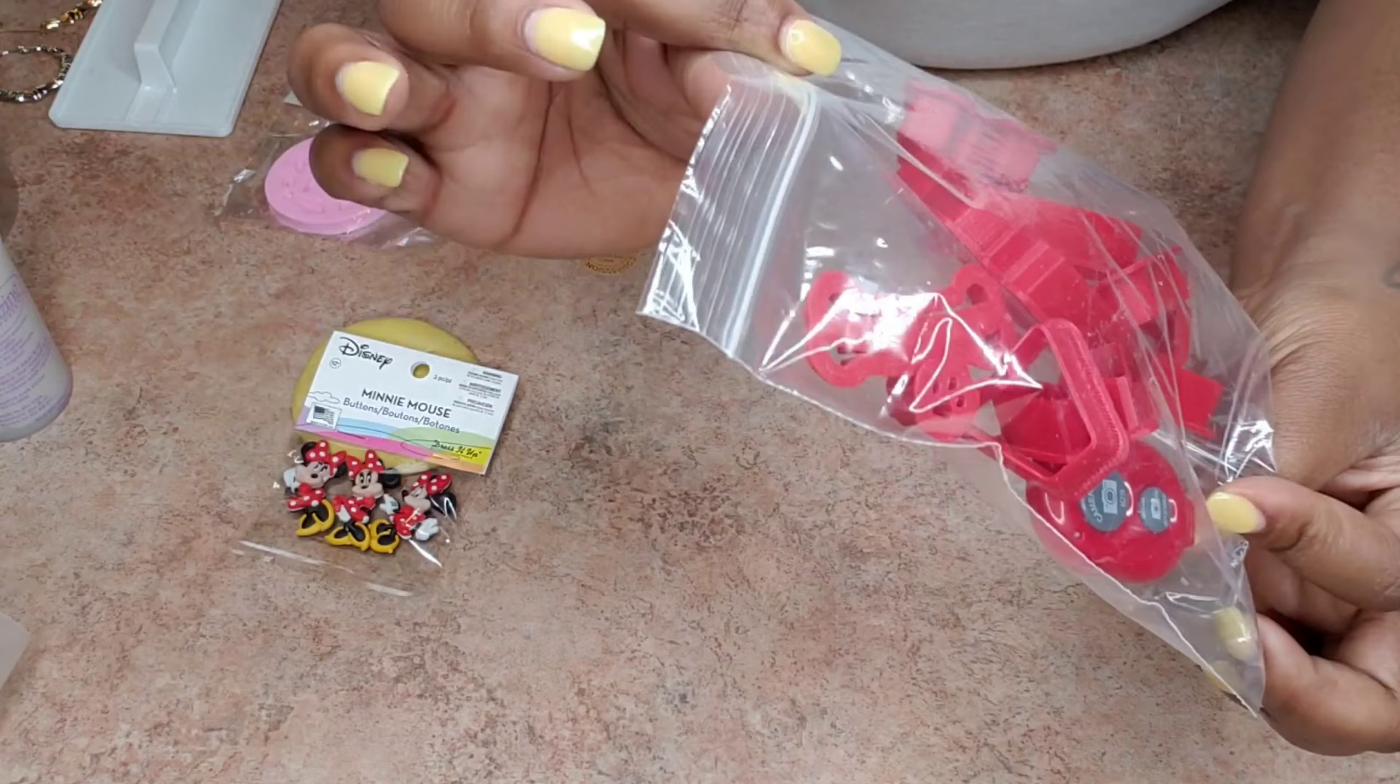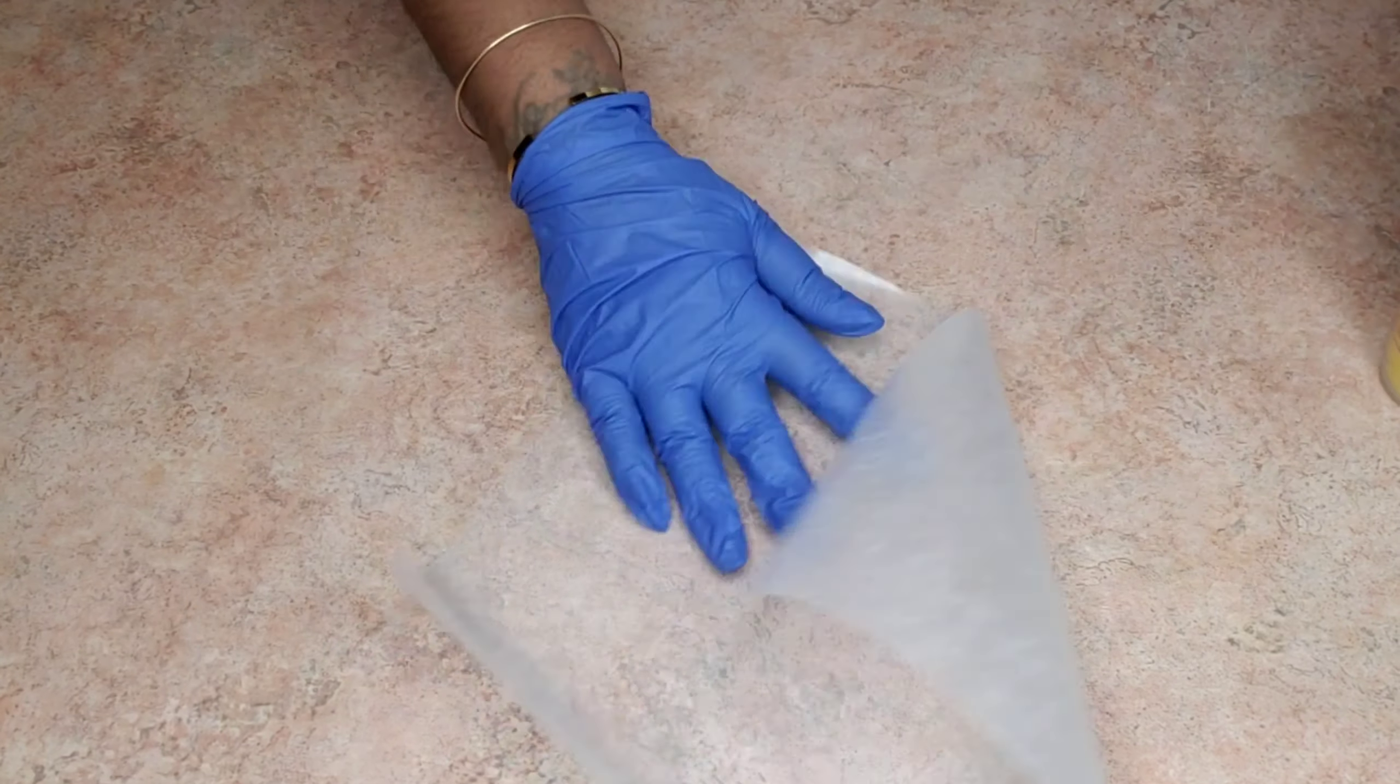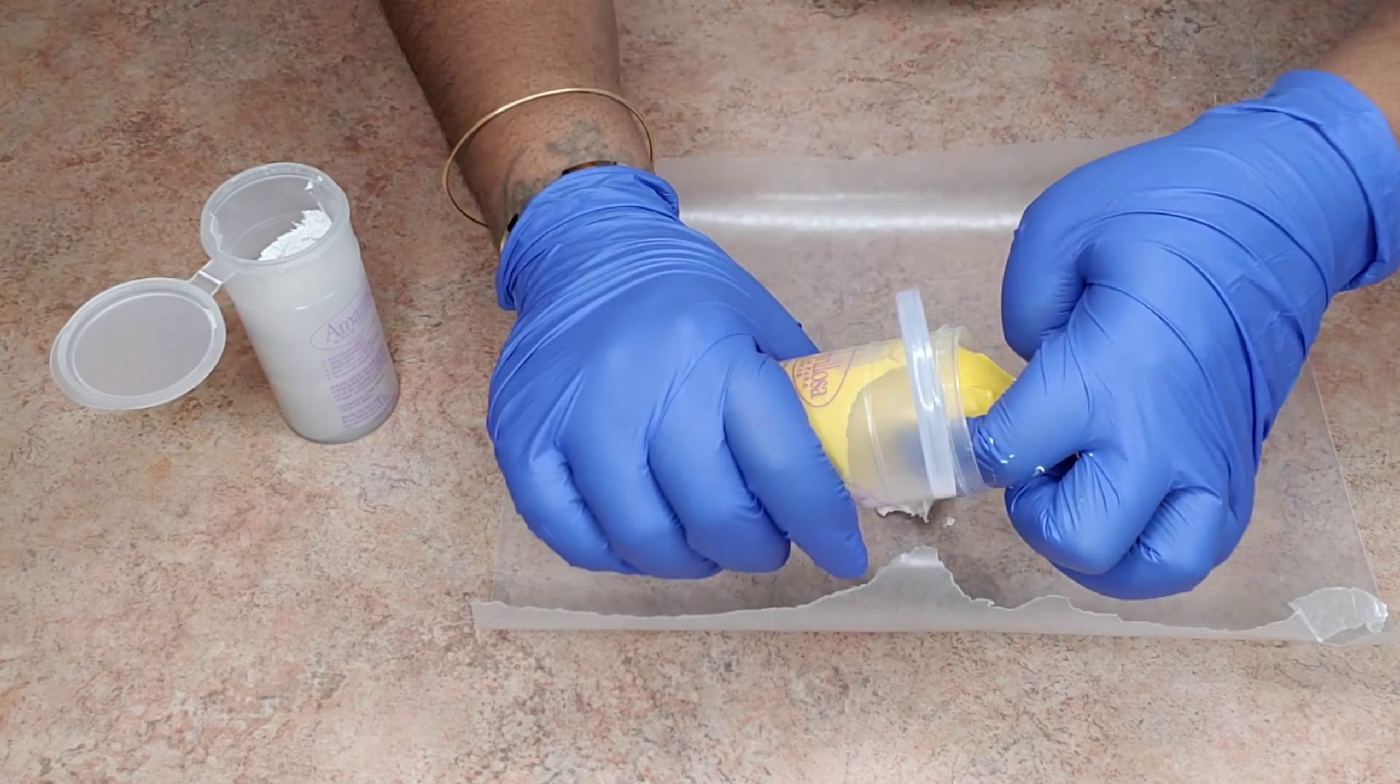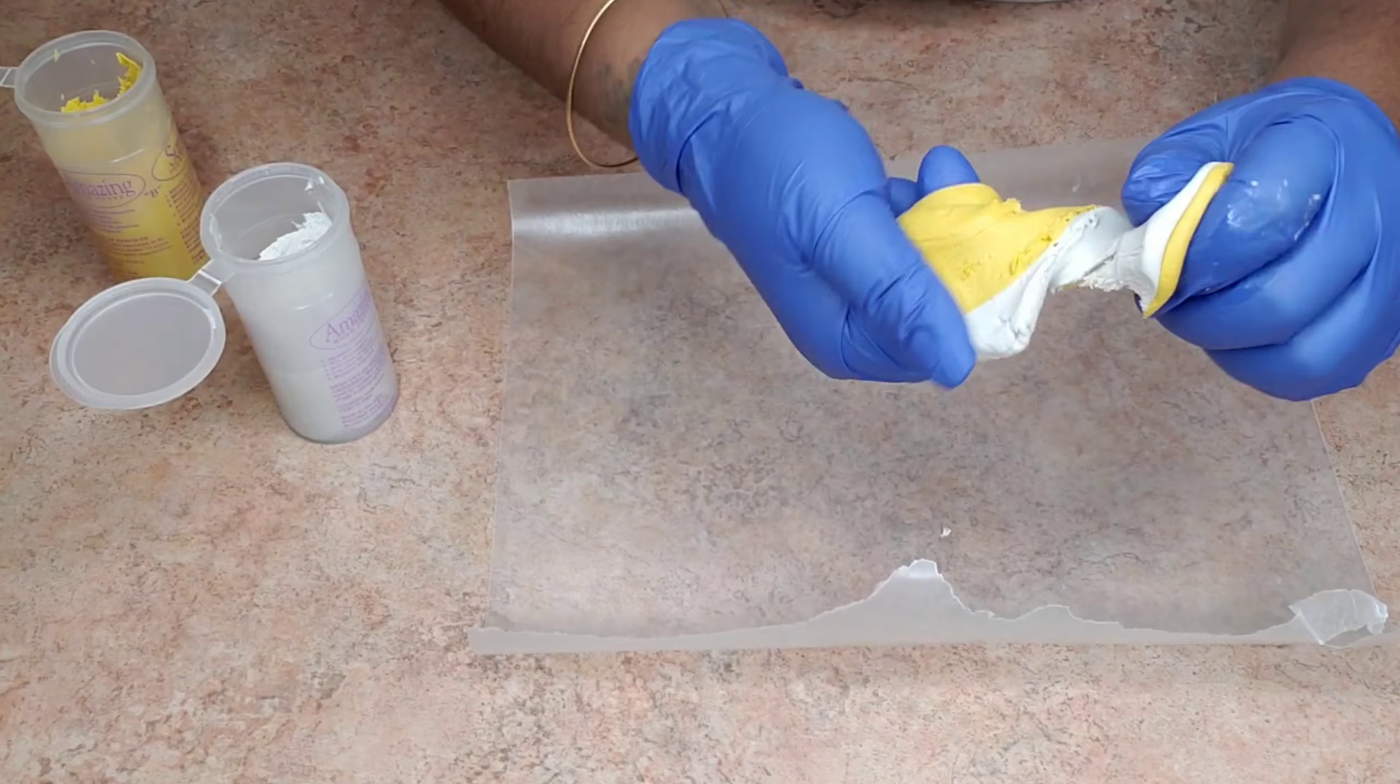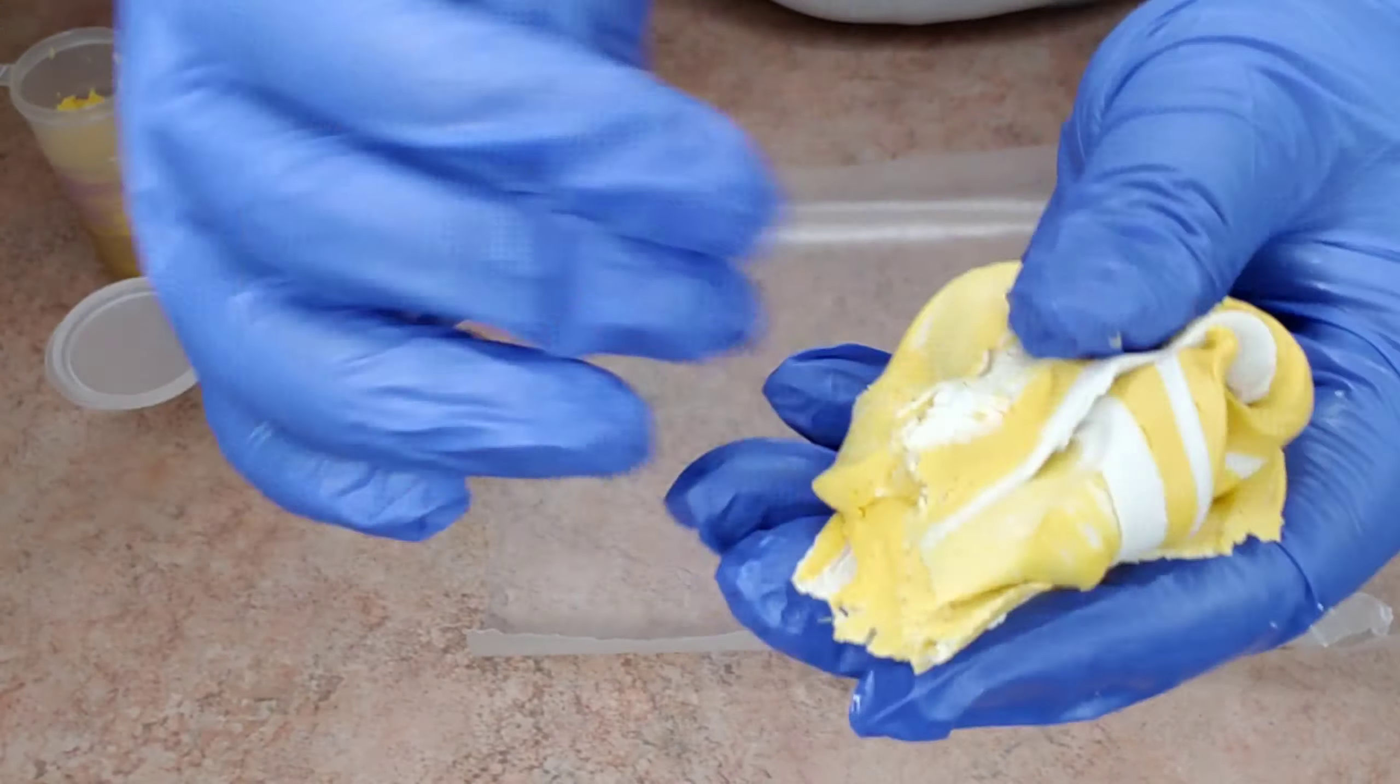I'm taking equal parts of the silicone—half yellow and half white—and mixing them together. You want to work fast because it reacts to your body temperature. If your hands are hot and warm, it will firm up extremely fast.